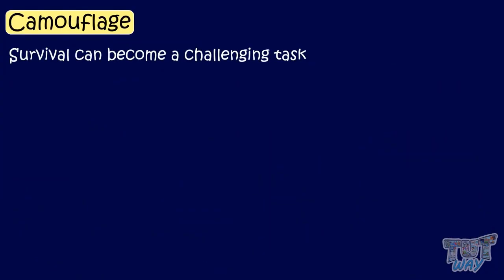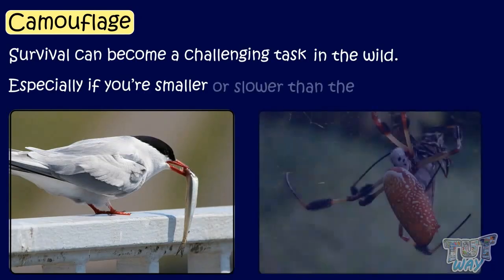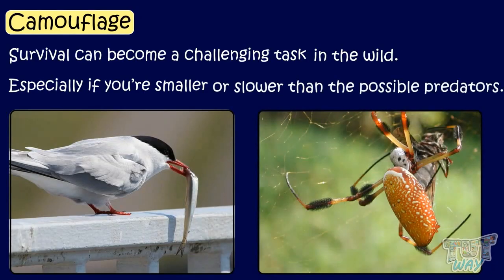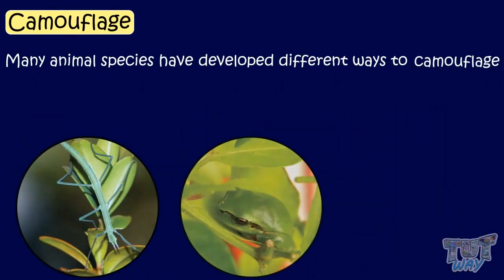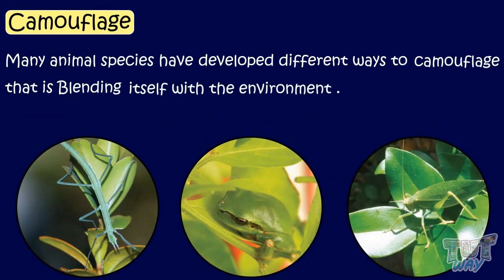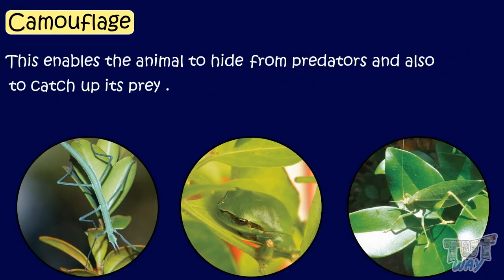Camouflage. Survival can become a challenging task in the wild, especially if you're smaller or slower than the possible predators. This is why many animal species have developed different ways to camouflage — that is, blending itself with the environment. This enables the animal to hide from predators and also to catch its prey.